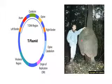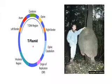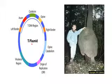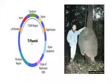How does an agrobacterium cause infection in the host plant cells? The main factor responsible for causing infection in the host plant cells is the Ti plasmid. The Ti plasmid present in the agrobacterium incorporates the DNA into the host cell and causes the tumor.